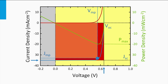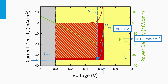Let's get a feeling for typical values. Consider a JV curve measured under standard test conditions representing a typical crystalline silicon solar cell. The maximum power density is 19 mW per square centimeter, giving a conversion efficiency of 19% under the standard irradiance of 100 mW per square centimeter. With an open circuit voltage of 0.64 V and a short circuit current density of 35 mA per square centimeter, we arrive at a fill factor of 84.8%.